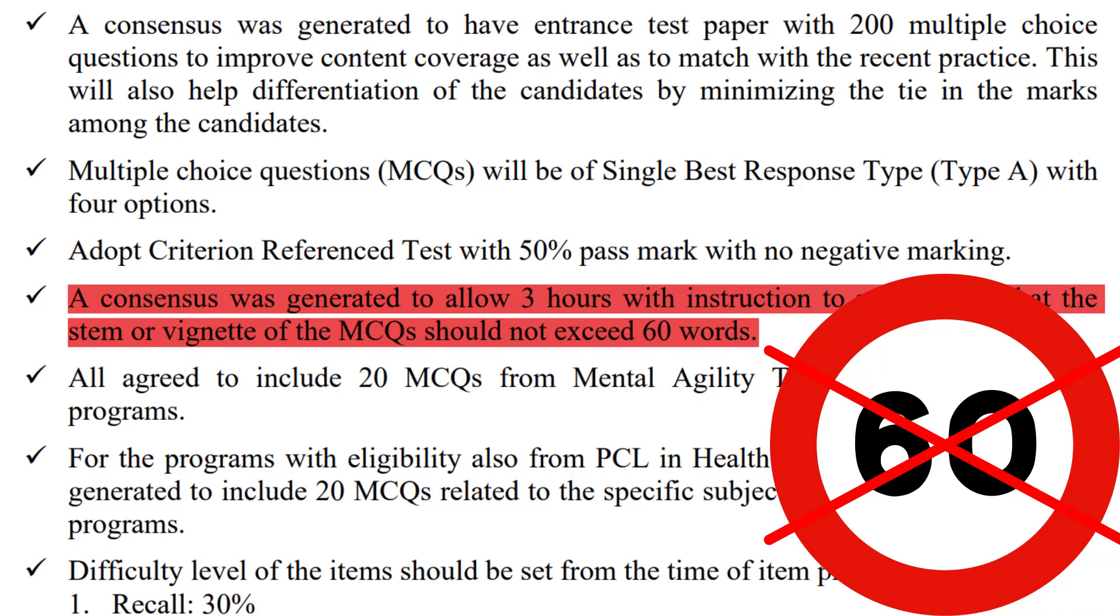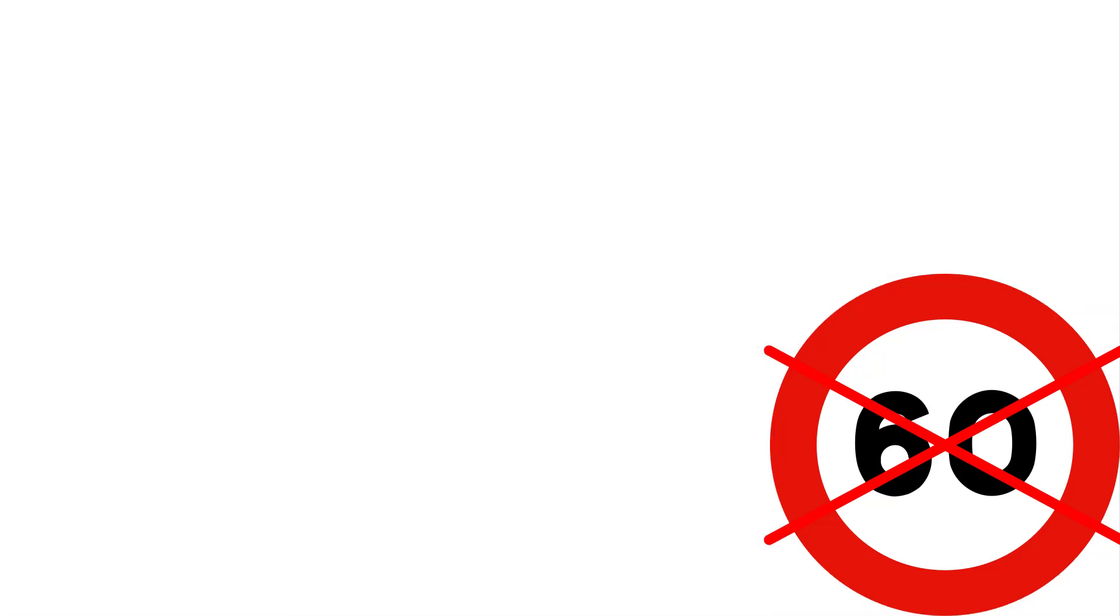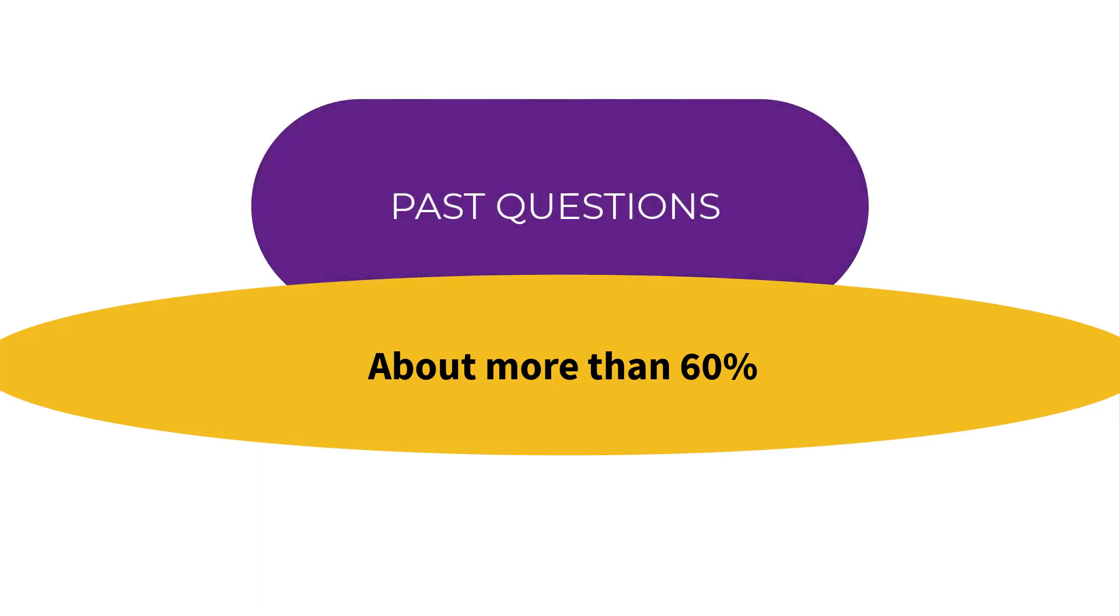Another really common thing most of you might have already noticed is that most questions are set on the basis of past years' questions. There are certain most repeated questions which you have to focus on while practicing MCQs. Every year, about 60% of the questions in the question paper are from previous years' past questions, and you can't afford to make mistakes on those if you want a good position for scholarship or a good college.